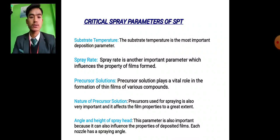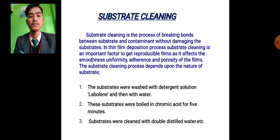Critical spray parameters of standard penetration test. First, substrate temperature. The substrate temperature is the most important decomposition parameter. Spirit is another important parameter which influences the property of films formed. Precursor solution plays a vital role in the formation of thin films of various compounds. The nature of precursor solution: precursor used for spraying is also very important and it affects the film properties to a great extent. Angle and height of spray: this parameter is also important because it can influence the properties of deposited films. Each nozzle has a spraying angle.